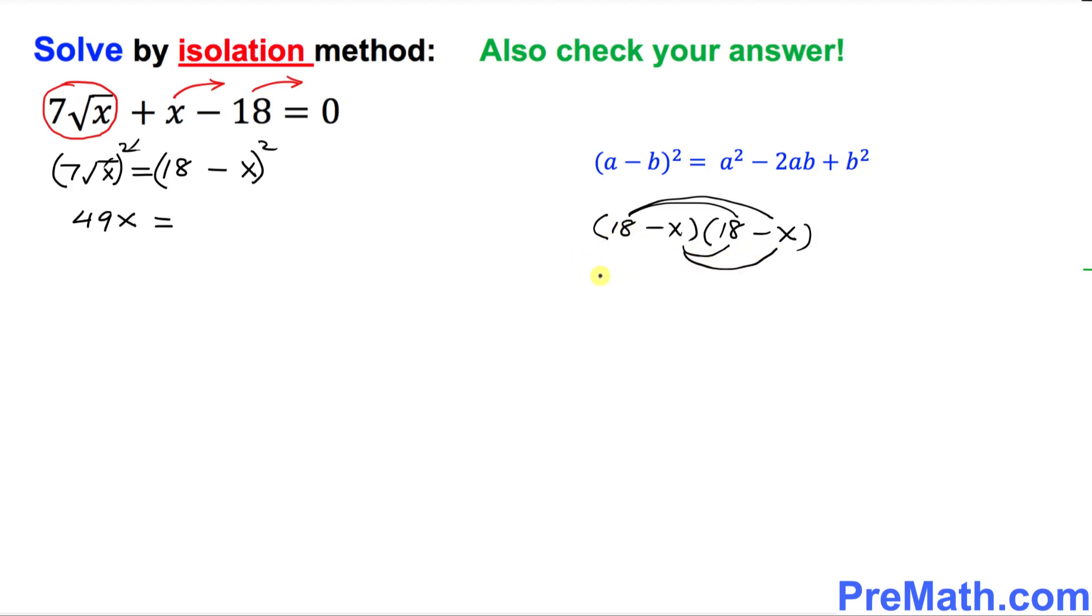18 times 18 is 324. And when you multiply this thing, that's going to be negative 18x and minus 18x again and plus x square. See, these are like terms. I can write down 324 minus 36x plus x square.